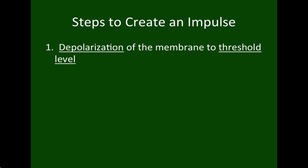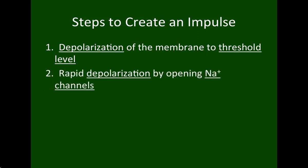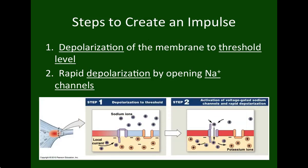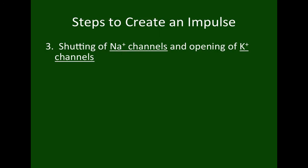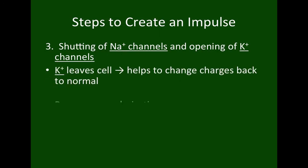Let's go through the actual steps of an impulse. Step one: we depolarize the membrane to threshold. Then we get a very rapid depolarization because all of the sodium channels snap open. On this diagram, once we reach threshold, we open the sodium gates and most of the sodium comes in. Once that's done, we shut the sodium channels and open the potassium channels, causing potassium to rush out of the cell. This starts changing our charges back to normal — beginning the process of repolarization.